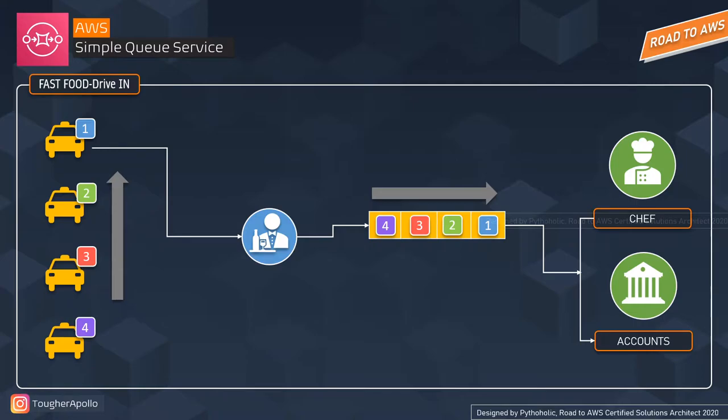I hope you are getting the idea. Imagine this as a situation where you have multiple producers and a single consumer here to process the request — what we also call a message. But if this was sequential, let's see another real-time example.